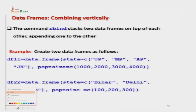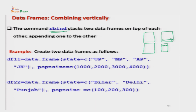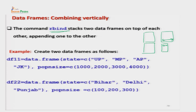अब rbind command की बात करते हैं। rbind data को vertically arrange करता है - एक data frame के नीचे दूसरा। इसके लिए एक common condition है कि दोनों data frames में columns की संख्या और नाम same होने चाहिए। जैसे एक data frame में state और popn_size हों और दूसरे data frame में भी state और popn_size हों, तभी rbind काम करेगा।